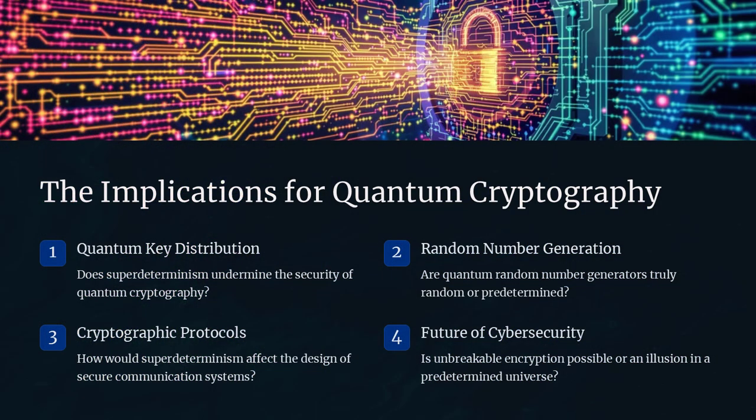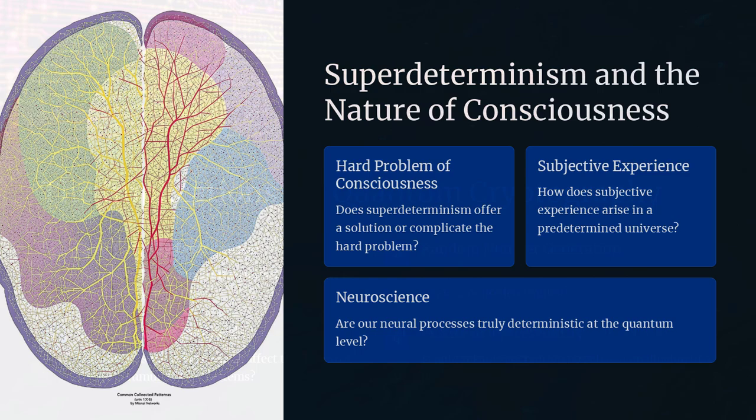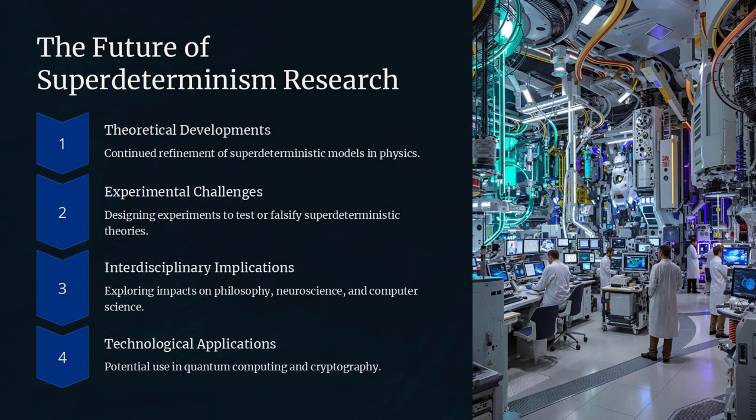If super-determinism turns out to be true, it would force us to rethink not just physics, but our very notion of reality, free will, and what it means to make a choice.